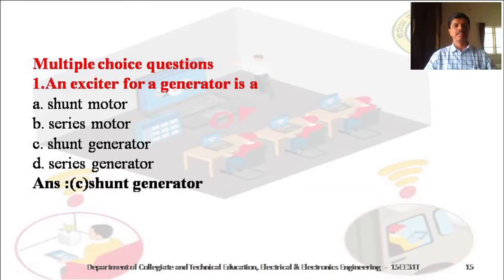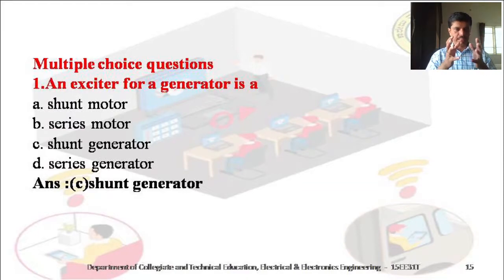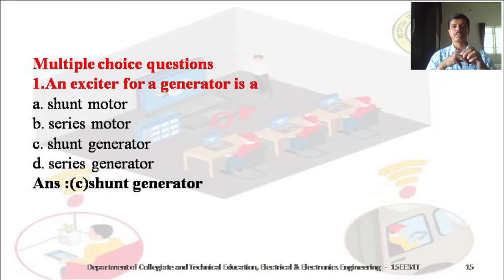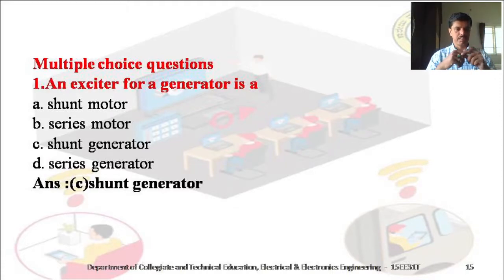Now, some multiple choice questions regarding the excitation system. An exciter for a generator is a — whether it is a shunt connected, series connected, series motor, or shunt generator. In this case, we go for a shunt generator because a shunt generator gives constant voltage from no load to full load condition. Therefore, the answer is a shunt generator.